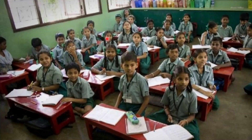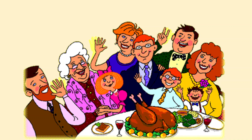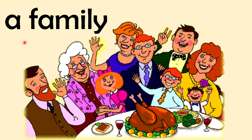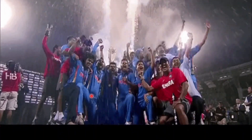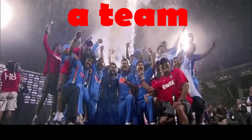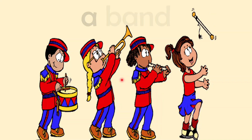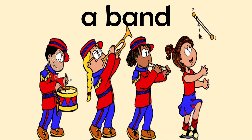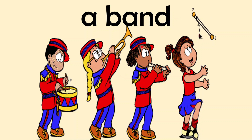An audience — this is an audience in the stadium; we call them 'an audience' because they are all audience. A class — all the students are sitting in a classroom, so 'a class' is a collective noun showing a group of students. A family — all the family members together; 'a family' is a collective noun denoting all family members. A team — the Indian cricket team includes all players; 'a team' is a collective noun. A band — many different kinds of persons make up a band; 'a band' is a collective noun.